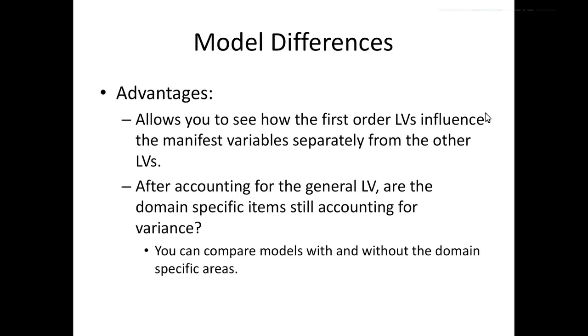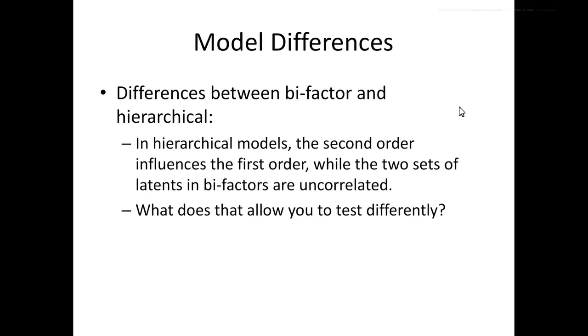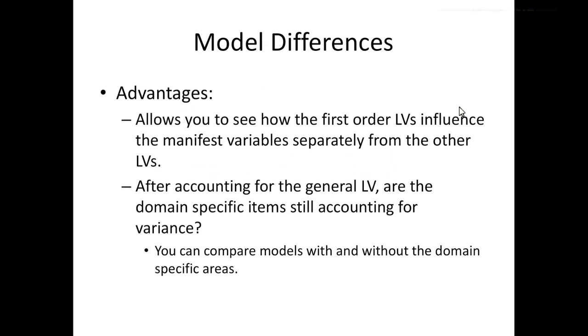In a hierarchical model, it really allows me to see how those first order latents influenced... I'm sorry, this is for bifactor models. To back up a second. So what does that allow me to test differently? In a hierarchical model, what I'm getting to test is the structure of this influences this, which then influences that. So it's kind of an A to B to C. Whereas in a bifactor, it's like, if I control for this, what's left? So a lot of times the variance is actually being accounted for in similar-ish ways, minus that correlation thing. But it's definitely a theoretical explanation difference between the two.